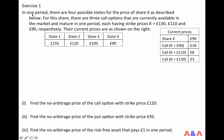In one period, there are four possible states for the price of share X. In state 1, the share price will be 150 pounds. In state 2, the price will be 120. In state 3, 100 pounds. In state 4, 90 pounds.